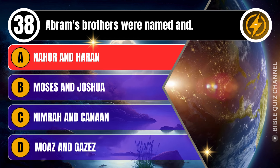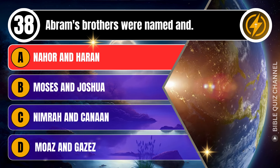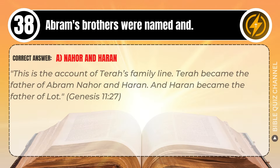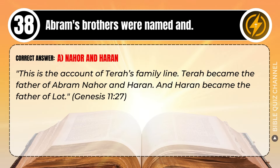Correct answer: A. Nahor and Haran. Explaining the Bible — This is the account of Terah's family line. Terah became the father of Abram, Nahor, and Haran, and Haran became the father of Lot. Genesis, chapter 11, verse 27.